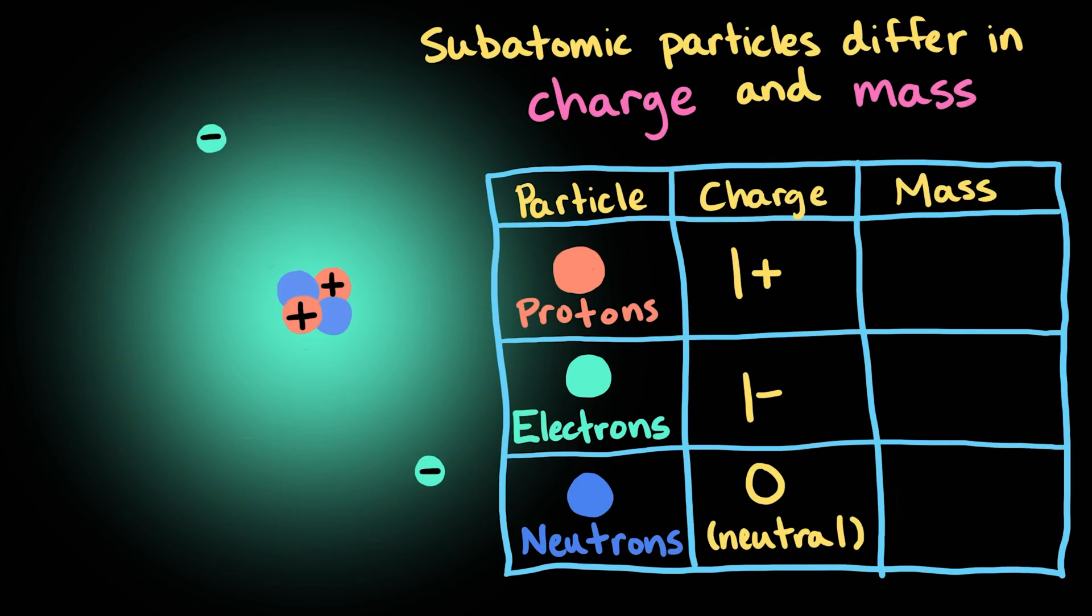What about mass? The unit we use to express the masses of subatomic particles is the Unified Atomic Mass Unit, abbreviated as U. Protons and neutrons have a similar mass, about 1U.